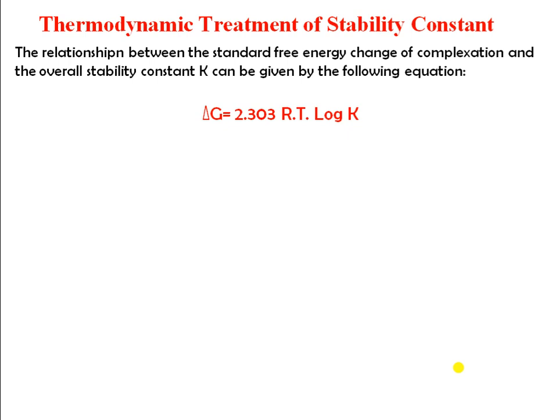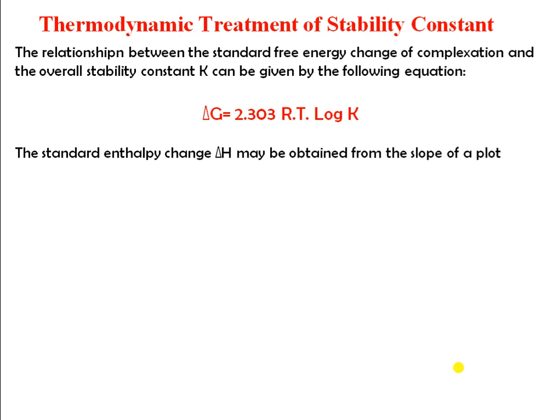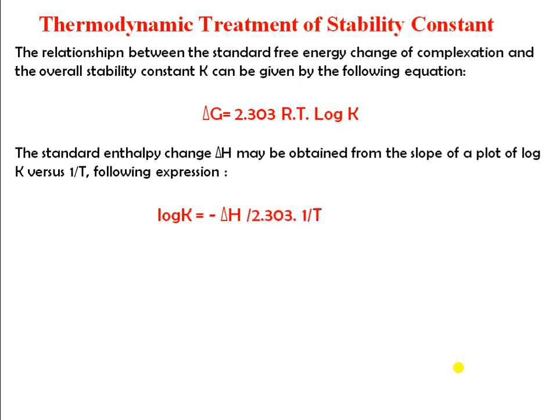The standard enthalpy change ΔH may be obtained from the slope of the graph of log K versus 1/T. When you plot the graph of stability constant versus one over temperature, the slope of that graph gives the value of the standard enthalpy change. We can rearrange this equation to: log K = −ΔH / 2.303R × (1/T) + constant.